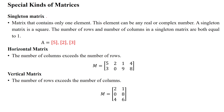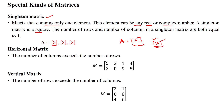Another matrix is the singleton matrix, which has only a single element. For example, A equals 5. This is a singleton matrix with only one element, which can be a real number or complex number. A singleton matrix is always square, meaning it has a one-by-one dimension — one row and one column. So the number of rows and number of columns in a singleton matrix is equal to 1.